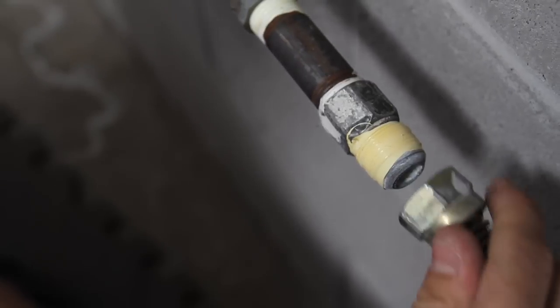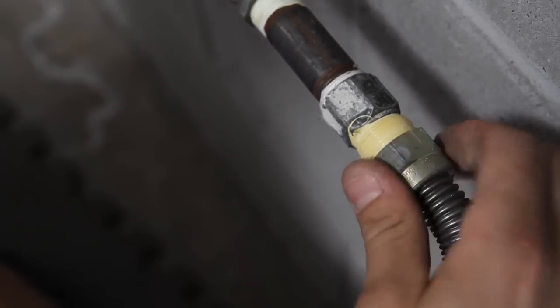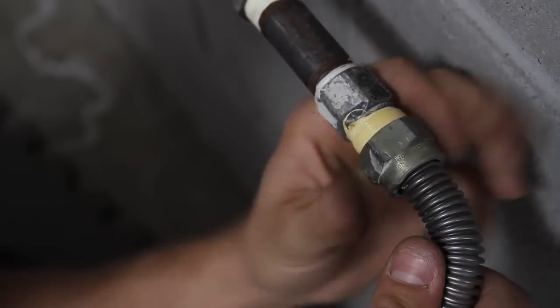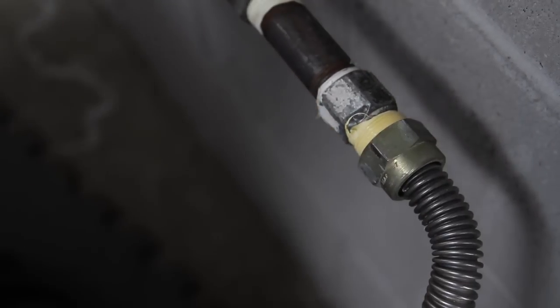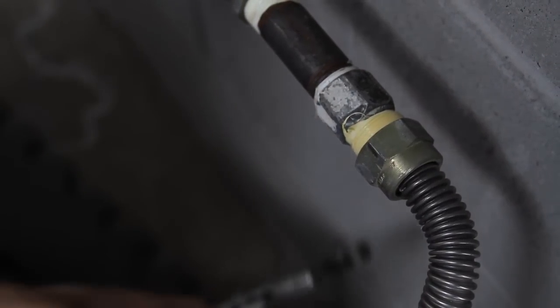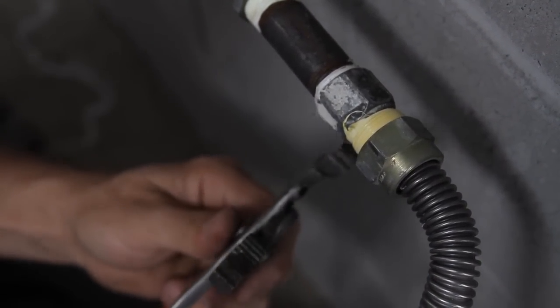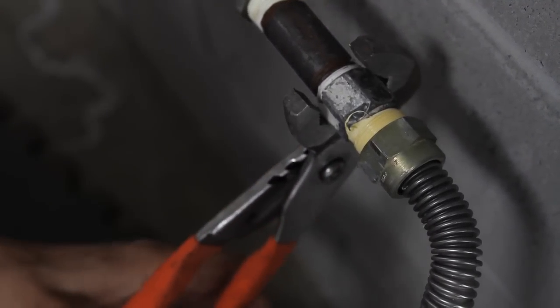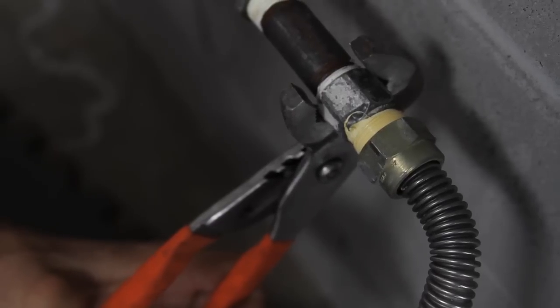Once you get the tape on there, grab your gas line and start reattaching it to the pipe. Get it as tight as you can, and then you're going to need to grab your two pair of channel locks, one on the line to the home, one onto the actual gas line.